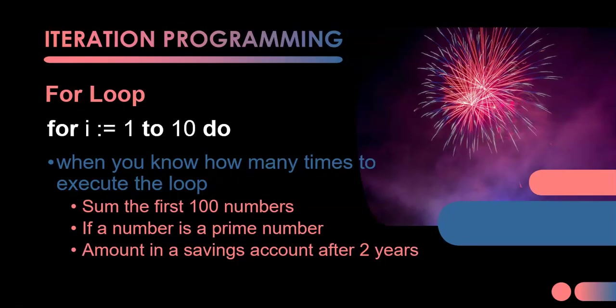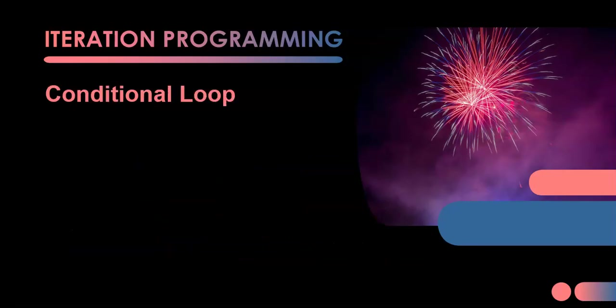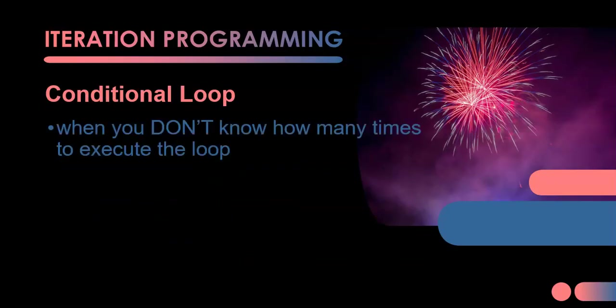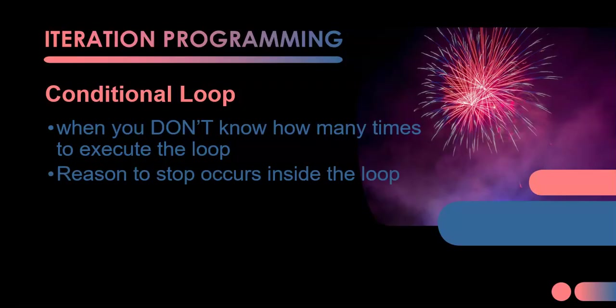But there are times when you don't know how many times to do the loop. For that, you need a conditional loop. The way a conditional loop works is if you don't know how many times to execute it, there'll be some sort of criteria or condition that'll make it stop — a reason to stop the loop inside the loop.